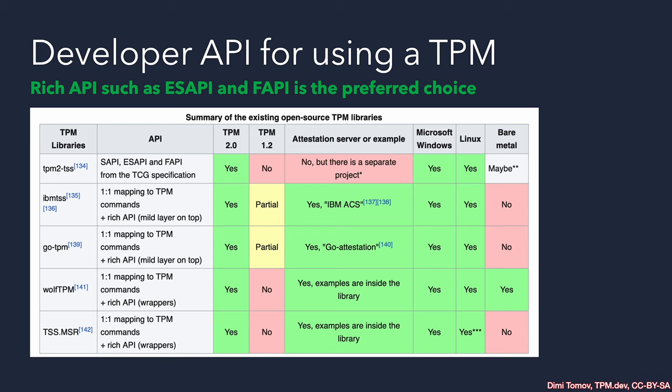The IBM stack, the GoTPM stack, and the WolfTPM stack all share the same design pattern. There is a one-to-one mapping to TPM commands API that is there in case we need more control, more granularity, and more access to options, flags, and parameters. But each of these stacks also has its own rich API to perform whole operations, sometimes even in sequence. WolfTPM calls this rich API 'wrappers.' Instead of having to do five or six TPM commands, we just issue one WolfTPM API call that takes care of the rest. This is a very similar approach to the SAPI and especially the FAPI.